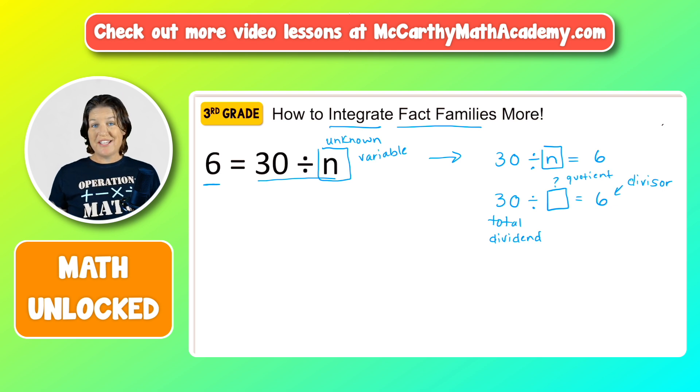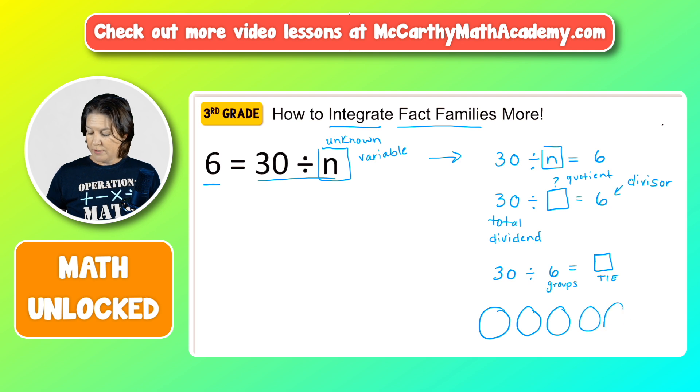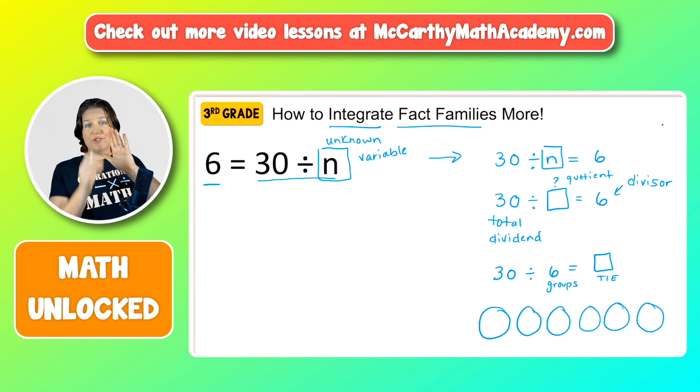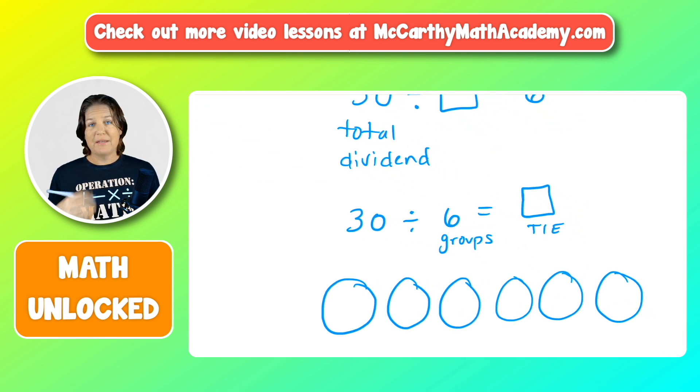So what we could actually do is rewrite it in a way that maybe students have seen. If I have 30 total divided by 6, I'm going to say groups, my quotient will be the things in each. I could have also said that it was 6 things in each and then determine how many groups. Either one would have been okay there. So let me go ahead and draw 6 groups: one, two, three, four, five, six. We have 30 total divided equally into 6 groups. So let's do that.